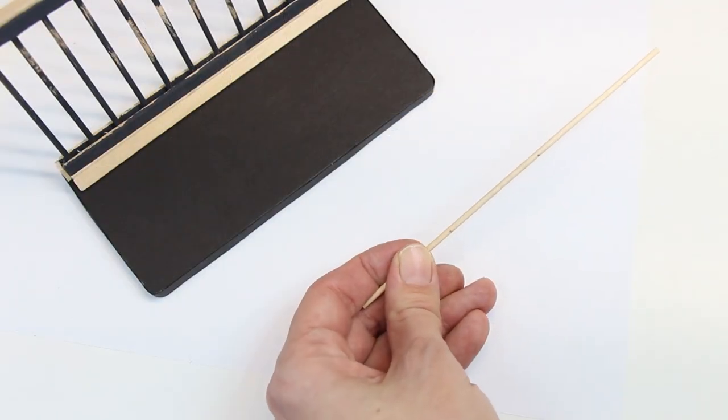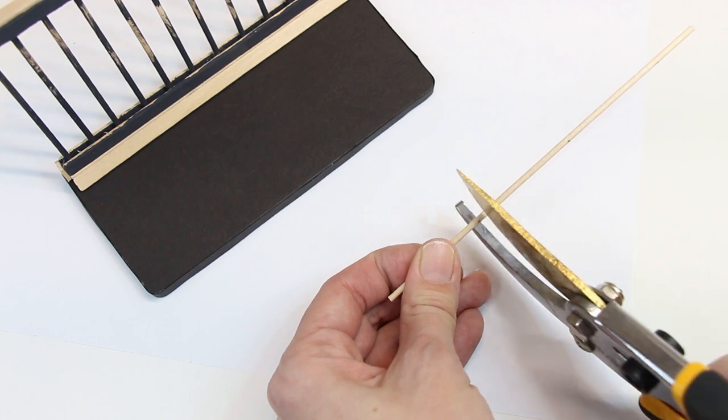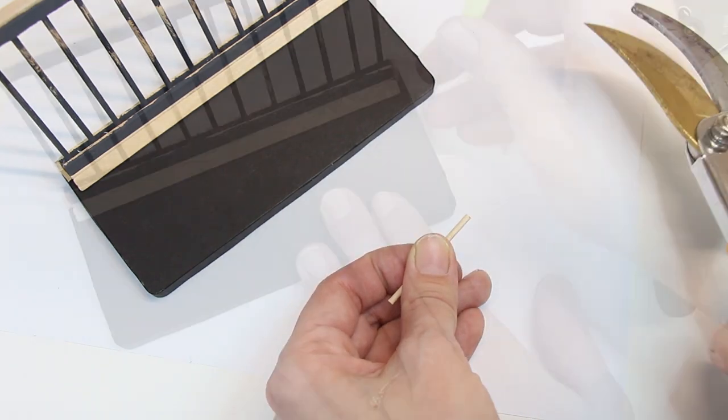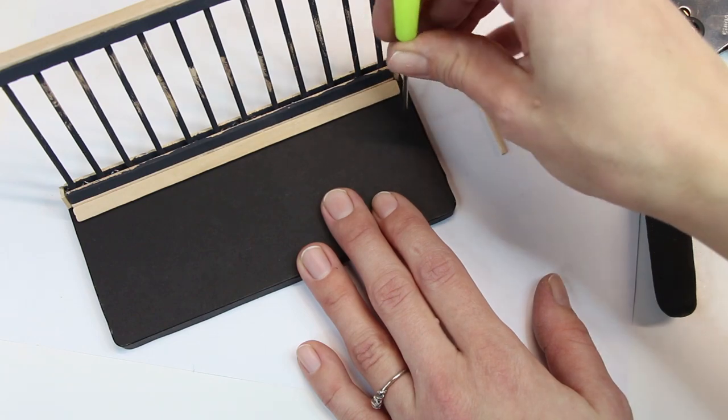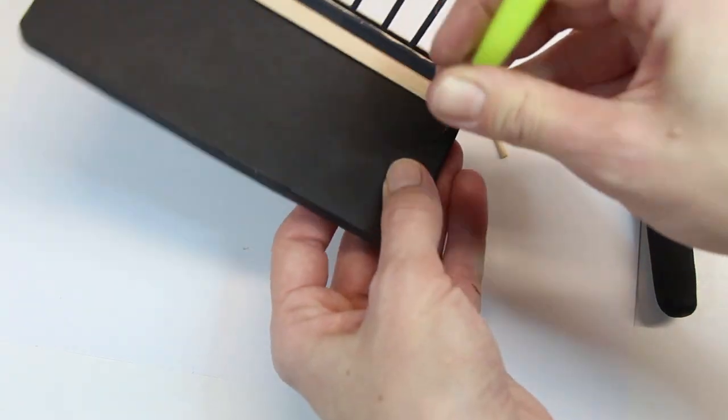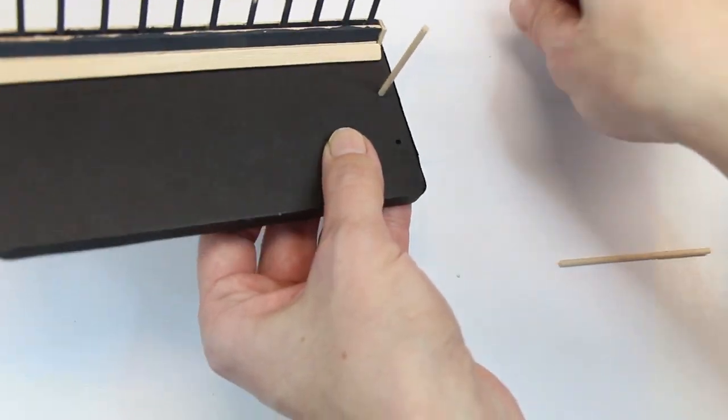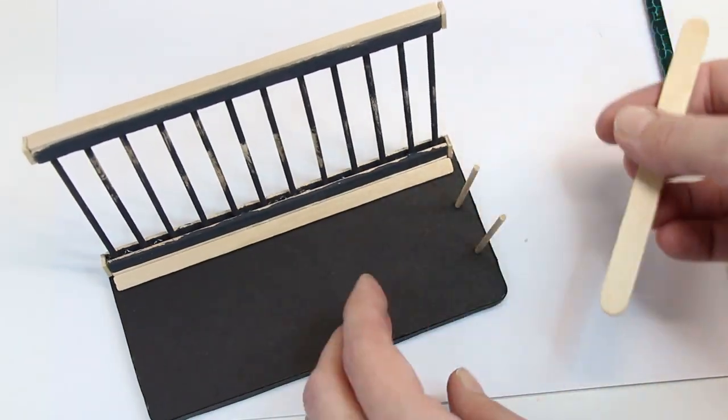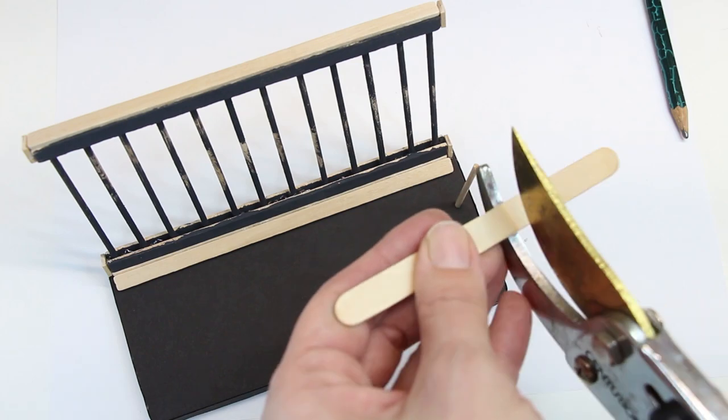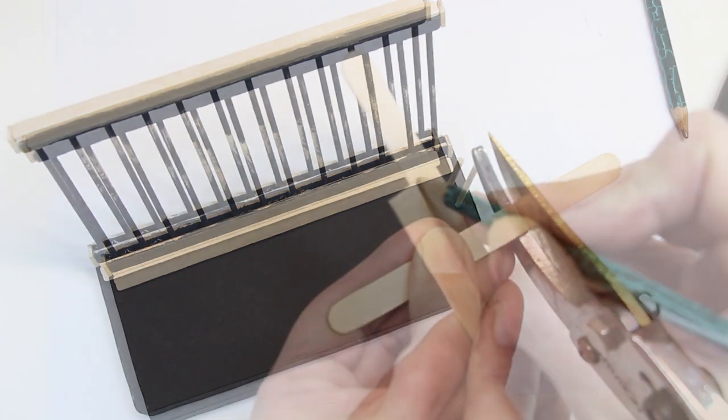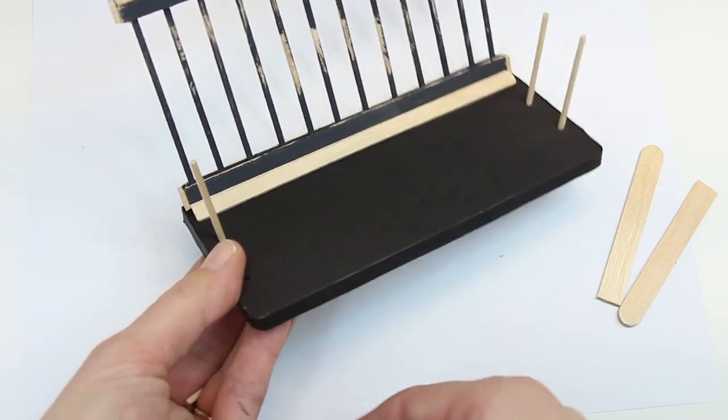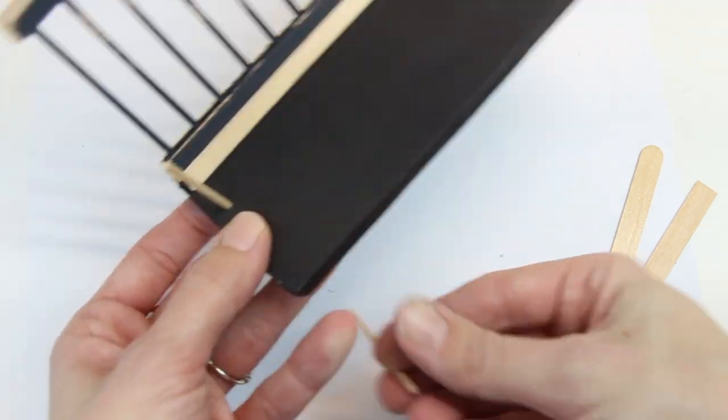Take more skinny dowels and cut four to one and three fourths of an inch. Then poke holes in the side of the seat about three fourths of an inch apart. Take a regular craft stick and cut it for the armrest. Use the first one as a pattern to cut the second one. Poke your holes and add the dowels on the other side.